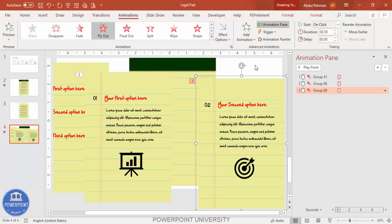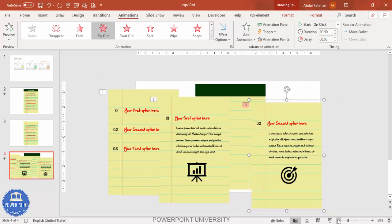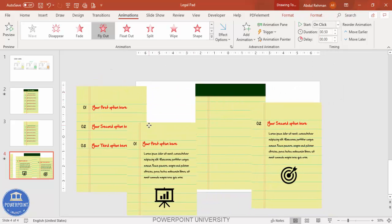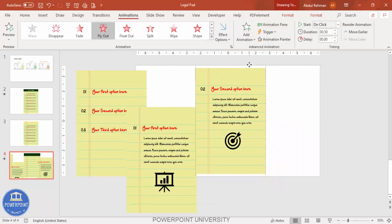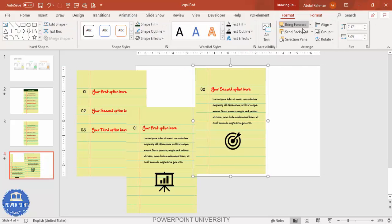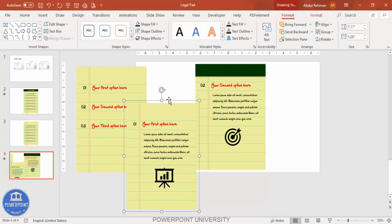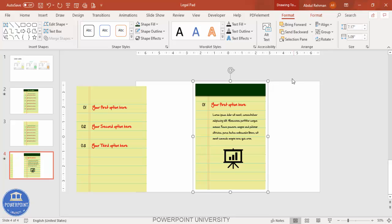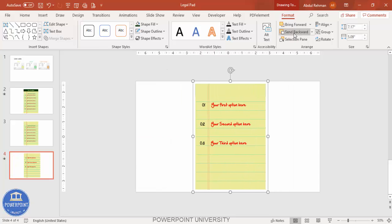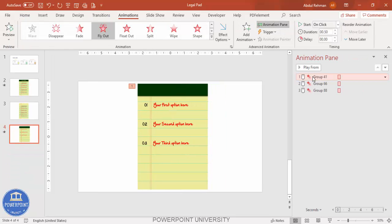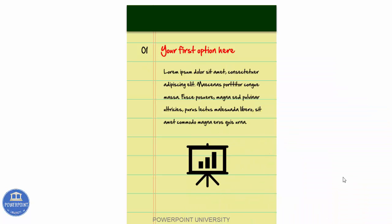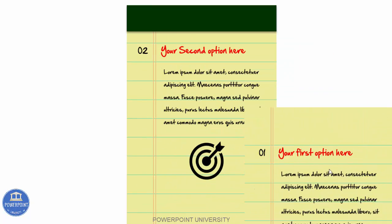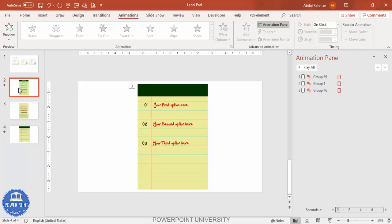Close the animation pane and zoom out. Arrange the papers — put the first page at the bottom, use Format and Send Back to layer them correctly, then place page two and page three on top. In slide show, when you click, each page flies out and the next option detail appears. That's how you create this legal pad or yellow pad animation in PowerPoint.